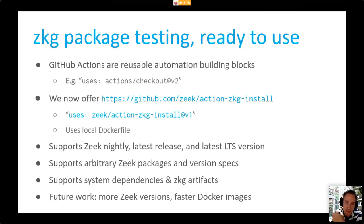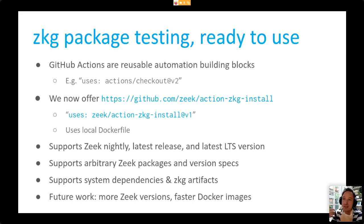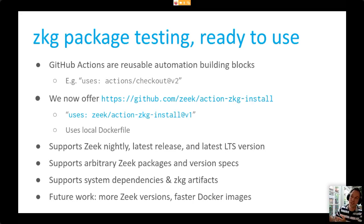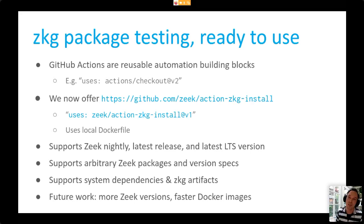GitHub, like many other source code hosting environments, has this notion of workflows or actions where you can drop a YAML configuration file in a subdirectory and it will run automation tasks. It could be continuous integration tasks or just some sort of automation. If you've used this before, you'll have seen the standard ones GitHub provides out of the box - like the checkout action where you say 'uses: actions/checkout@v2', which pulls in scripting from another Git repo defining what that action does.